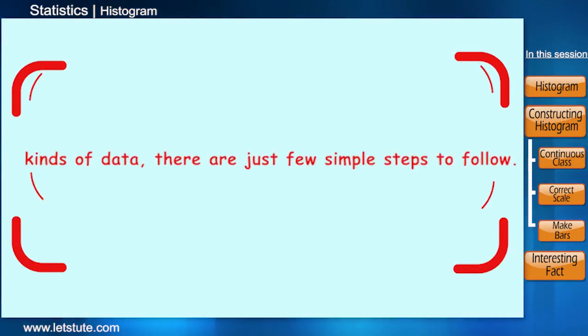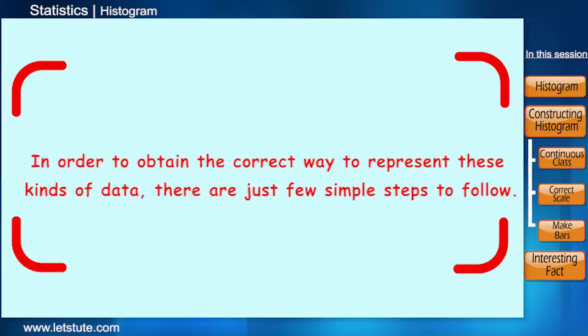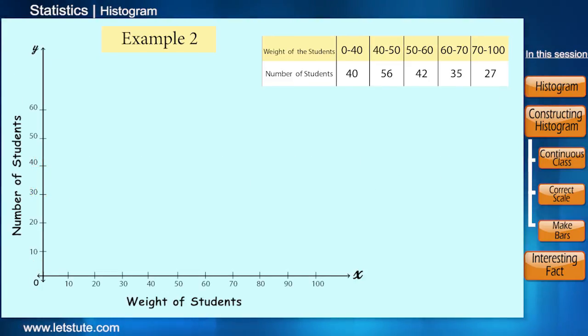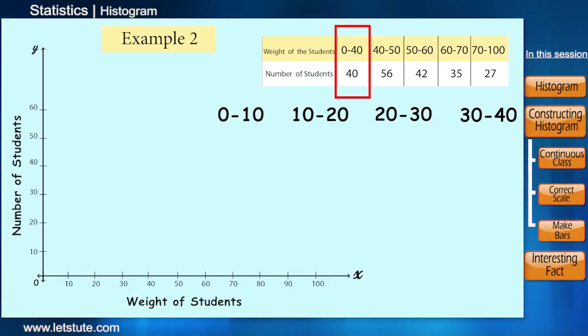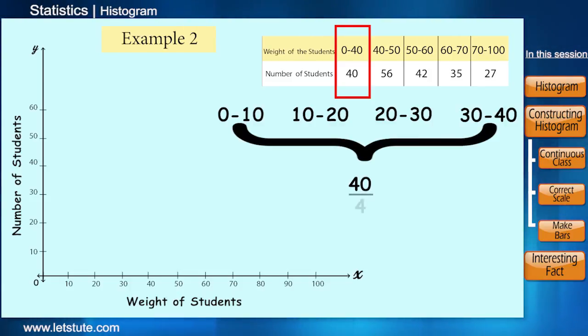Well in order to obtain the correct way to represent this kind of data, there are a few simple steps to follow. Now here the minimum class width is 10. So in order to graph the class 0 to 40, we have to make it appropriate as per the class width of 10. We can make 4 classes here: 0 to 10, 10 to 20, 20 to 30 and 30 to 40. Now we will divide the frequency by 4 which will give us 10. Now here it can be seen that the area of the histogram represents the proper frequency.